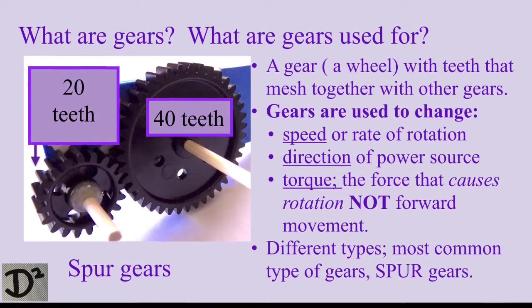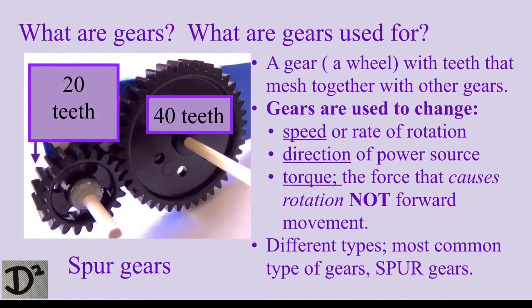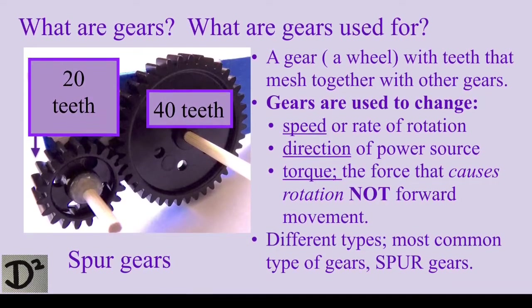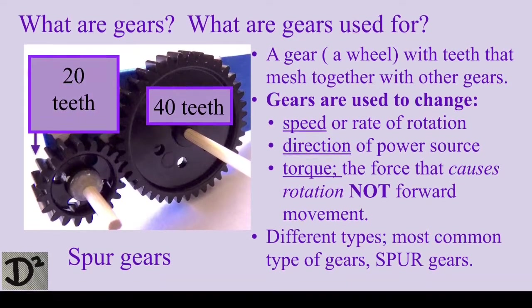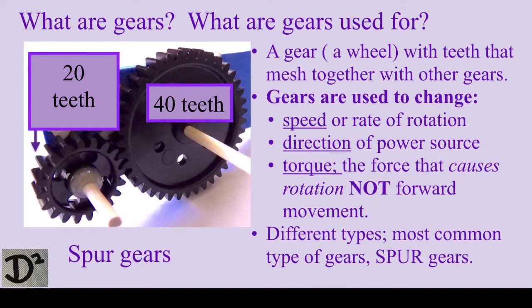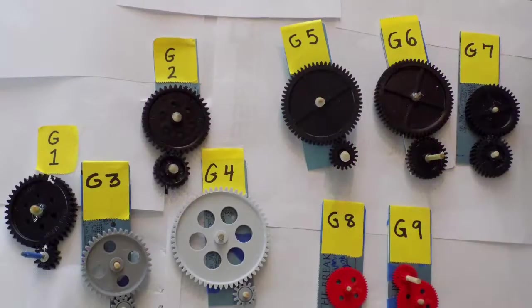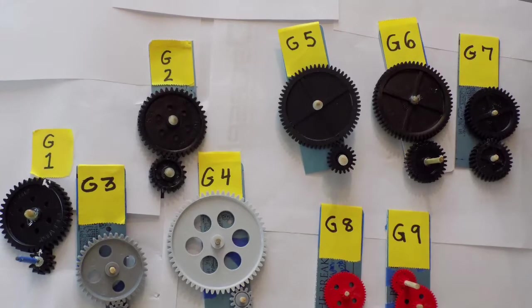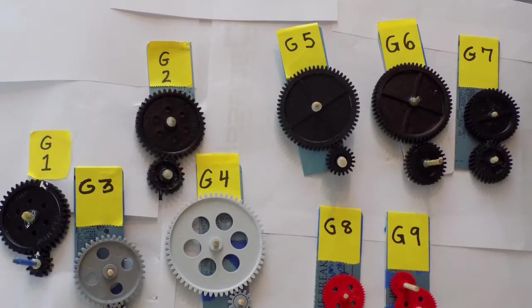Gears are used to change the speed or rate of rotation of an axle, or to change the direction of a power source, and to change the torque, which is the force that causes rotation that is transformed into forward movement. There are different types of gears for different purposes. Here, the focus will be on the most common type of gears, spur gears.